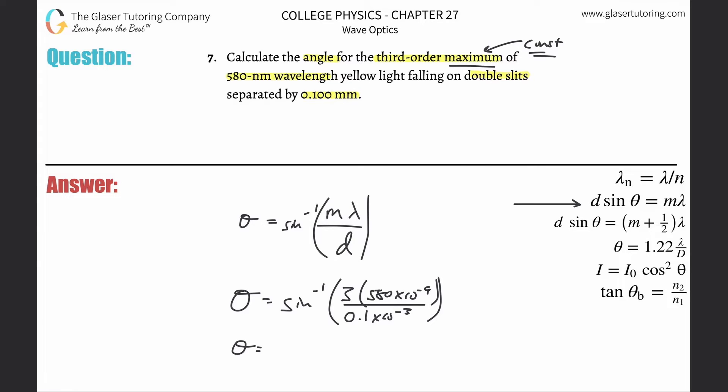Make sure you calculate this in degree mode. Inverse sine of three times 580 times 10 to the minus ninth divided by 0.1 times 10 to the minus three. This works out to be about 0.997 degrees.